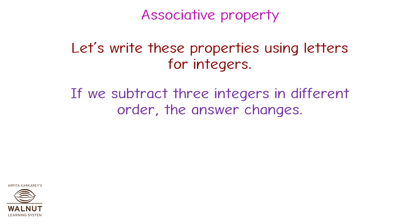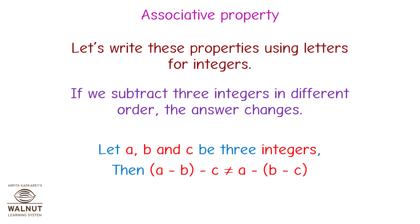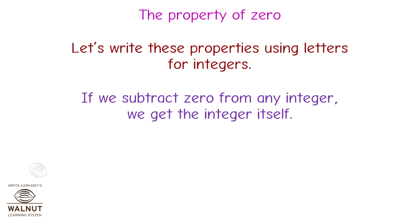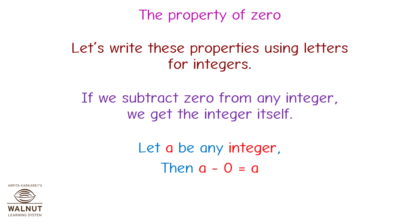Let's write these properties using letters for integers. If we subtract three integers in different order, the answer changes. Let a, b, and c be three integers. Then (a minus b) minus c is not equal to a minus (b minus c). The property of zero: if we subtract zero from any integer, we get the integer itself. Let a be any integer. Then a minus zero is equal to a.